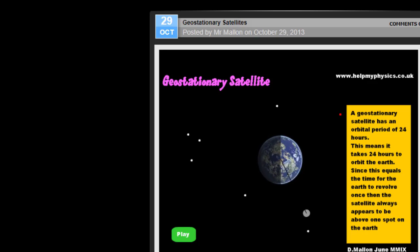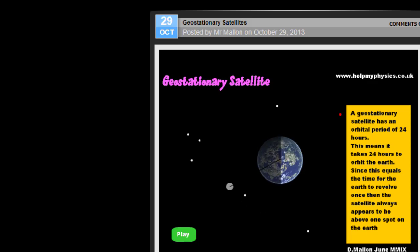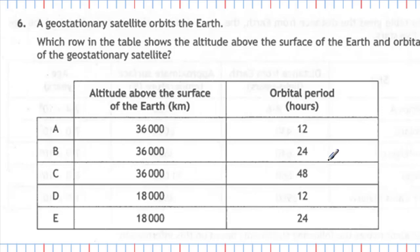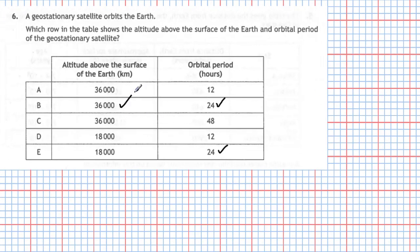Because the orbital period matches Earth's rotation of one day, the satellite always appears to be above the same spot on the Earth — that's why it's called geostationary: 'geo' meaning place, 'stationary' meaning stopped. The satellite will only have an orbital period of 24 hours at a special altitude: 36,000 kilometers above the surface of the Earth. So the answer to question 6 is B — altitude 36,000 km, orbital period 24 hours.